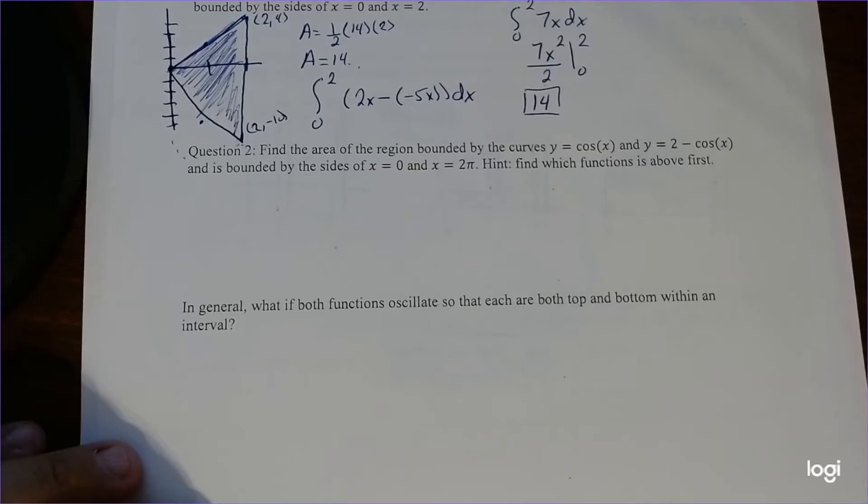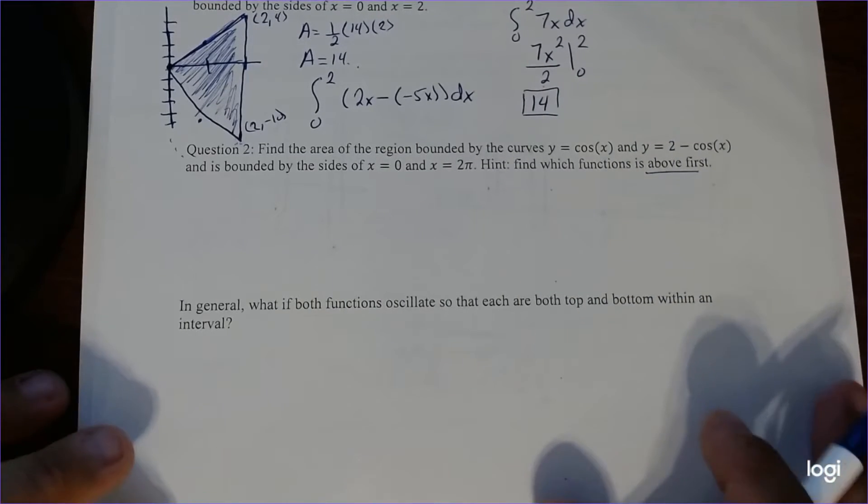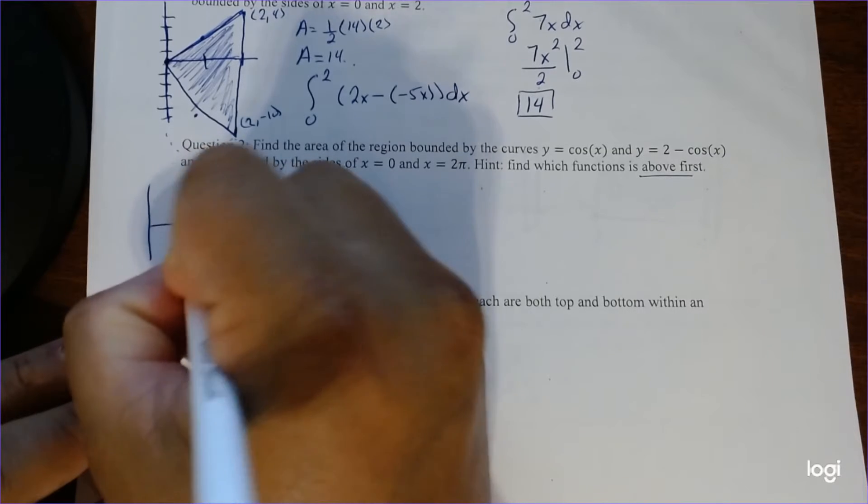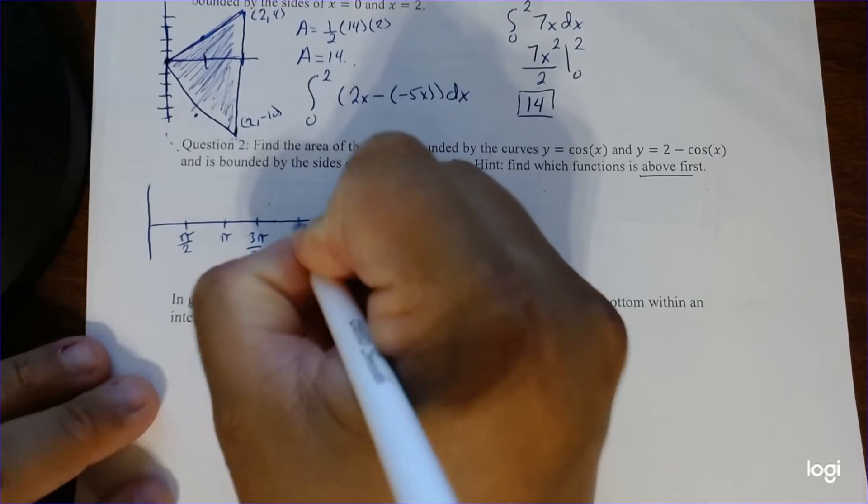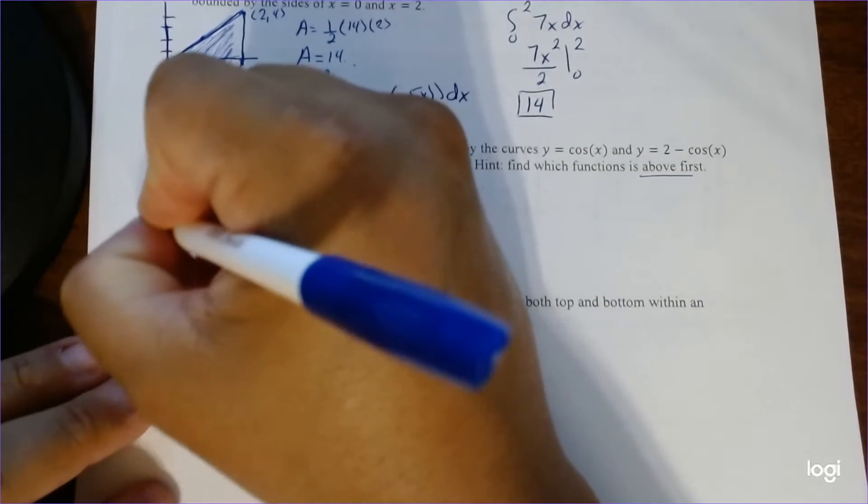So next question is find the area of the region bounded by the curves y equals cosine of x and y equals 2 minus cosine of x. So very, very similar graphs. If you guys remember right, the negative, so it's going to go the opposite direction of the regular cosine. And again, bounded between now this time 0 and 2 pi. So again, I'll give you guys a hint. You've got to figure out which one is above, which one's actually below. And it's actually going to probably tease you which one it is. So let's just quickly draw this to see what's going on. So we'll do the major parts. Half, pi, 3 pi over 2, and then 2 pi because that's our end points, right? 0 and 2 pi.